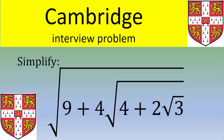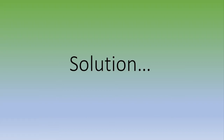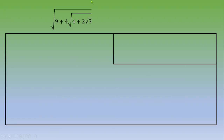Otherwise, let's see the solution. When you have such a problem, the quantity below the root — in this case, 4 plus 2 square root of 3 — you should begin by transforming this quantity into a perfect square. If the quantity is a positive value, then you can say that square root of x squared equals x.